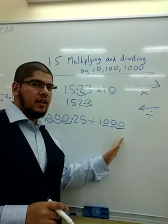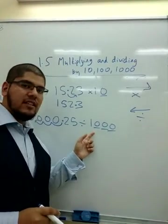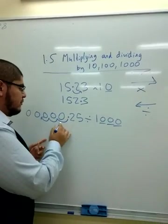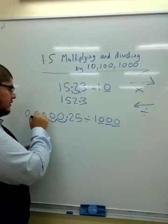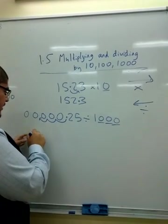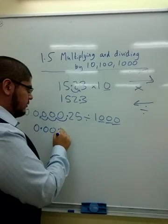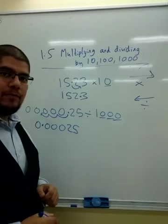Now then, when we come to dividing by a thousand, we see we have three zeros. And that's three decimal places. So, we move the decimal point three times and the new decimal point goes there. So, now we know our new answer is 0.00025.